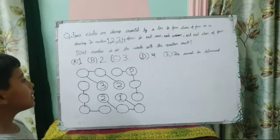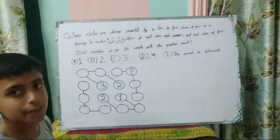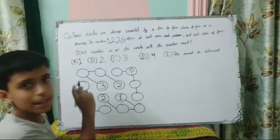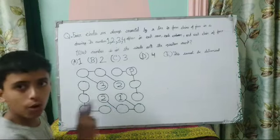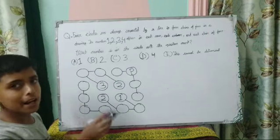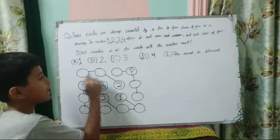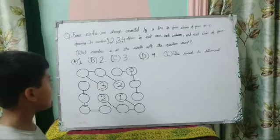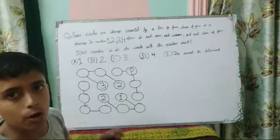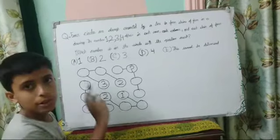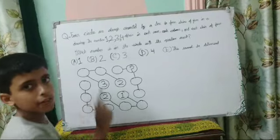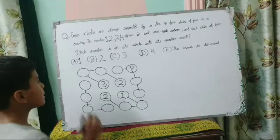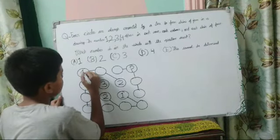First we are going to find which chain has the most number of digits. This chain has 2 digits and this chain also has 2 digits. You can start with any one of these chains. I am starting with this chain. Here, 3 and 2 are already occupied, so 3 and 2 cannot come. Only numbers 1 and 4 can come. So I am assuming that 1 will come here.